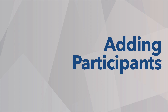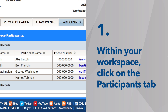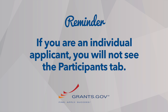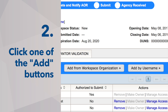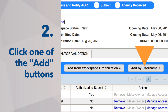Here's how the workspace owner can add a participant. First, go to the Manage Workspace page and click the Participants tab. Please note that if you are an individual applicant, you will not see the Participants tab. Second, click either the Add from Workspace Organization button or the Add by Username button.